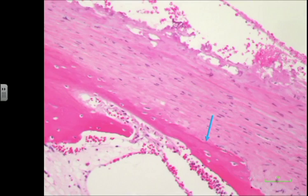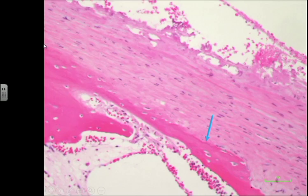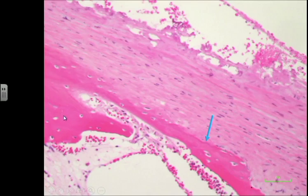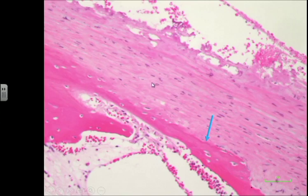The first one we'll speak about is periosteum. You can look at periosteum and consider it as part of bone, or it's the fibrous covering of bone. This is a cortex of bone — we can see that it's homogenous pink material. But just on the outer side of it, we have this fibrous tissue. Compare the fibrous tissue color to the bone matrix: bone matrix is very homogenous, dark pink material, while fibrous tissue is much paler. You can see a lot of cells in between it, which represent the fibroblasts.